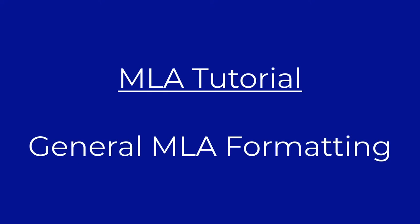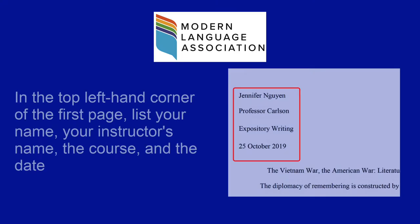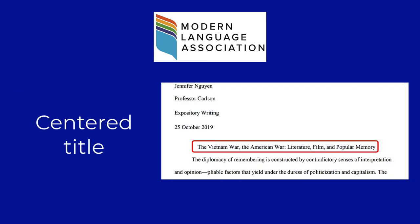MLA formatting, minus citations, is pretty standard and is often already in place in your word processor software. The general format includes, in the upper left-hand corner of the first page, your name, instructor's name, course, and the date. Below that, a centered title.